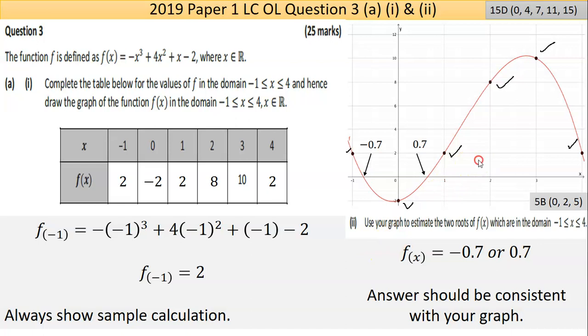So part 2 then, I'm going to take away the fluff here. Part 2 is asking me to use my graph - again, whatever graph I draw is accepted as correct - to estimate the two roots. So basically, the two roots is where does it cross the x-axis. Now, there is actually three roots, but one of the roots is not in that domain.